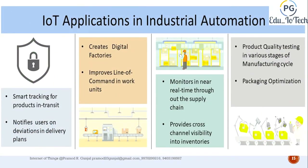IoT applications in industrial automation: this is one of the fields where both faster development as well as the quality of products are critical factors for industries. With IoT, industries can deliver better performance in both cost and customer experience by introducing factory digitalization, product flow monitoring, inventory management, safety and security, quality control, packaging optimization, and logistics and supply chain optimization.